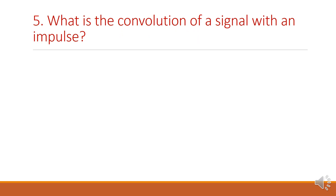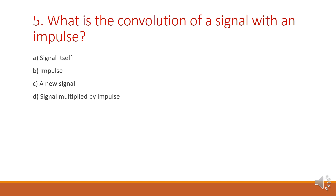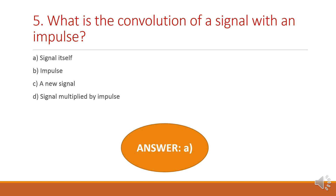Next question: what is the convolution of a signal with an impulse? The impulse, that is delta of n — if we convolve any signal with the impulse, you will be getting the same signal. Option A: signal itself. Option B: impulse. Option C: new signal. Option D: signal multiplied by impulse. The answer is option A, the signal itself. Any signal convolved with an impulse function is the same signal.